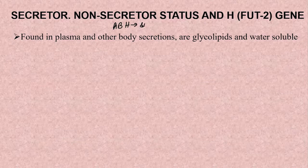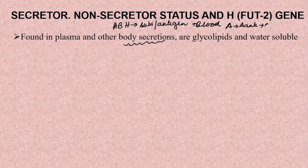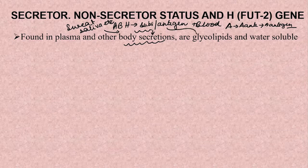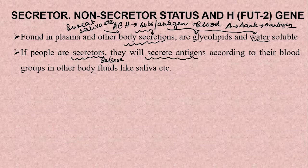The FUT2 gene is responsible for the detection of A, B, and H substances or antigens in body fluids in addition to blood. So if a person has blood group A and has A antigen on their RBCs, they are also going to show A antigen in other body fluids and secretions including sweat and saliva. These ABH substances present in other body fluids are glycolipids in nature and they are also soluble in water.